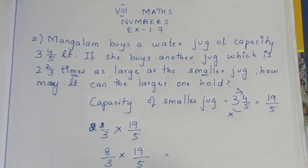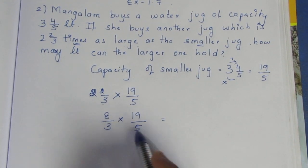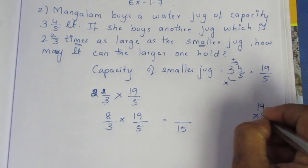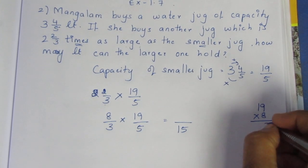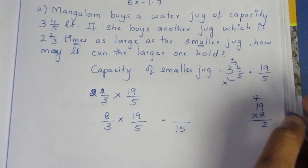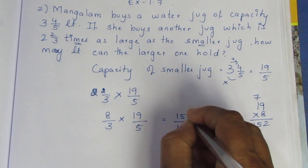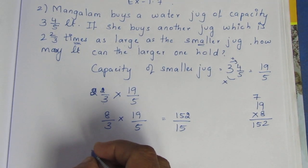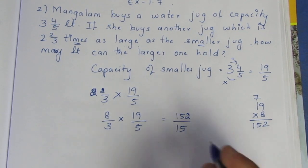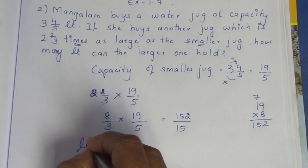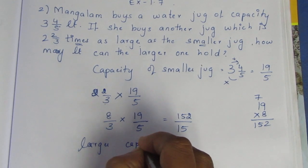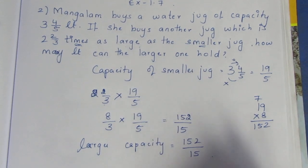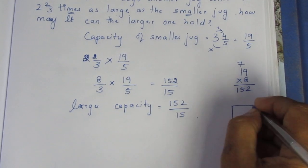If you look at this, the numerator and denominator will cancel. We check for common factors and cancel where possible to simplify the multiplication.